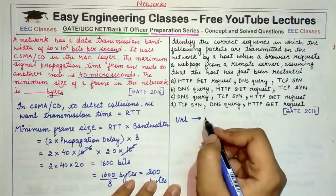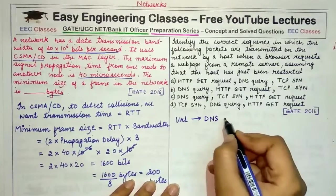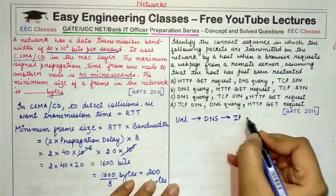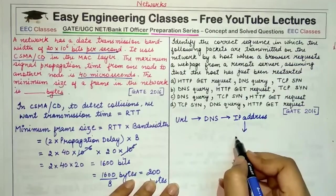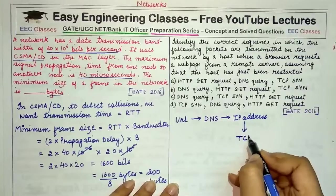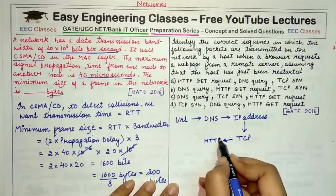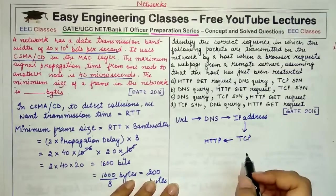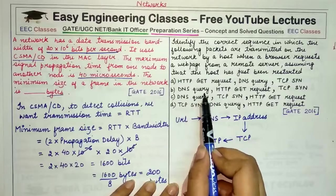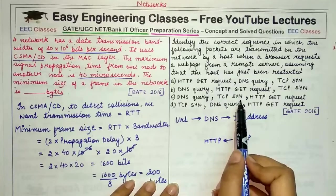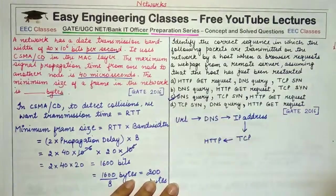So this URL is sent or the domain name is sent to the domain name system, which gives us the IP address. This IP address is used to establish connection by the TCP using TCP handshakes, and then after the connection has been established, we communicate using HTTP. So the correct option in this case is first we have a DNS query, then a TCP SYN, and then the HTTP GET request. So C is the correct option.